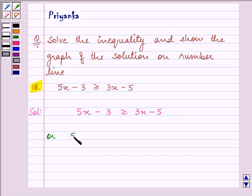Here, let us add 3 to both sides. On simplification, we have 5x is greater than or equal to 3x minus 2.